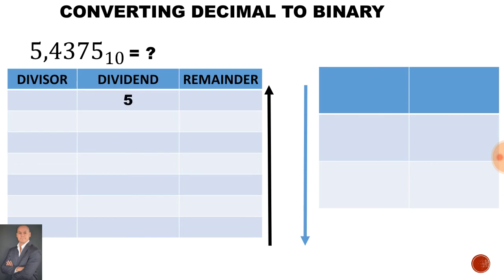The dividend is 5 and the divisor is 2. 2 will go into 5 twice, remainder 1. We can double check the answer by working one step backwards: 2 times 2 is 4, plus the remainder of 1 gives us 5. The divisor of 2 will go into 2 once, remainder 0.